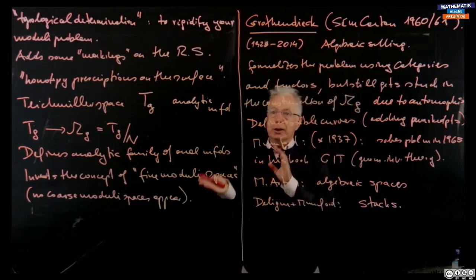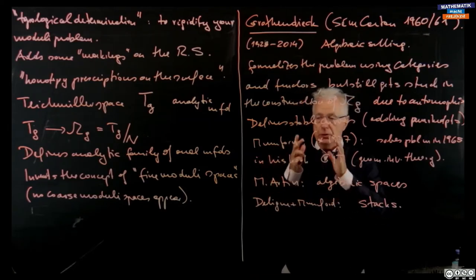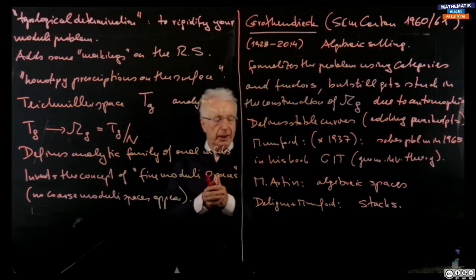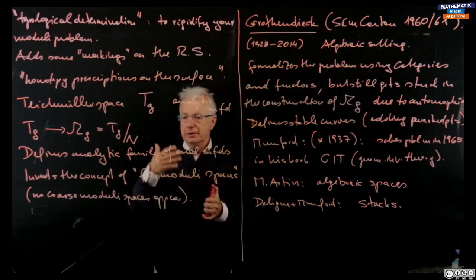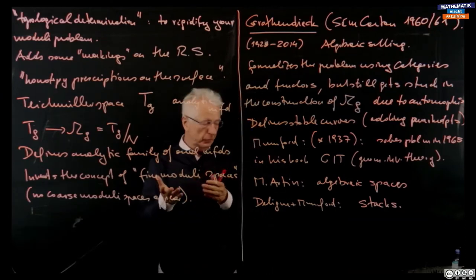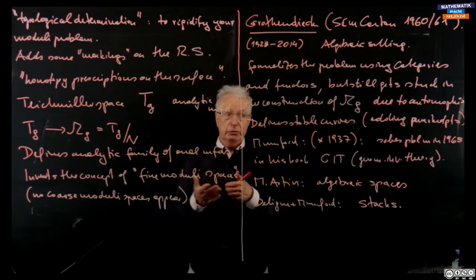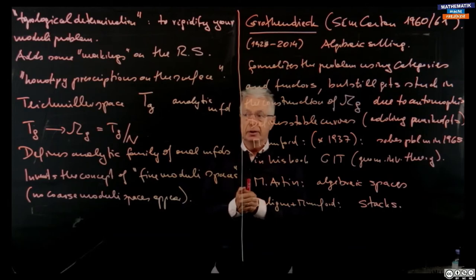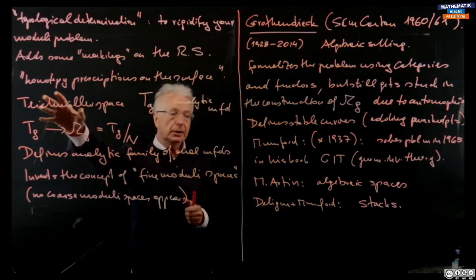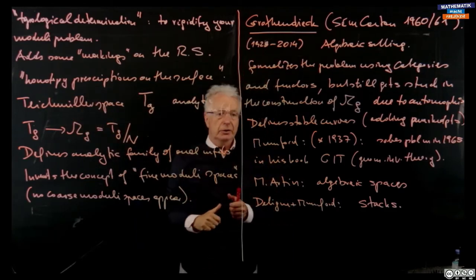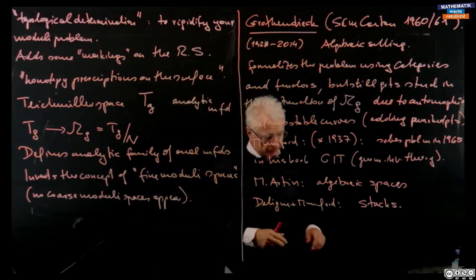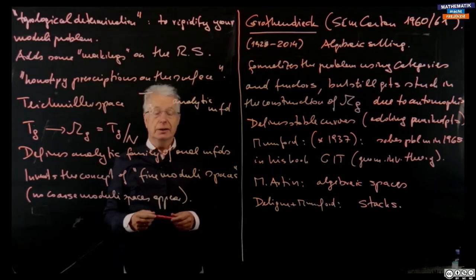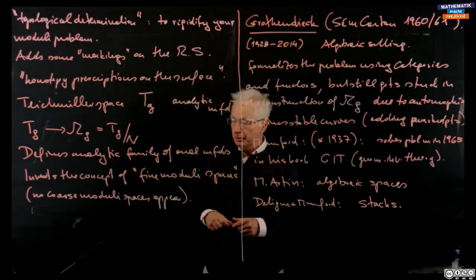To summarize: we start with Riemann, who makes a big breakthrough and proposes a problem, and many people jump on it. Klein takes up the idea and tries to make it more precise. The next important step is by Teichmüller — more on the topological side but very influential. Teichmüller is the analytic/transcendental part, and Mumford, Deligne, and Grothendieck are on the algebraic side. I really recommend you look at the article — there are many more details and anecdotes.